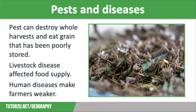The climate in LICs makes people vulnerable to a variety of pests that can harm crops, such as locusts, who often destroy whole harvests. Poverty also means that farmers are unable to use pesticides to protect their crops from this threat. In addition, facilities used to store grain in LICs can be poor, meaning that what has been grown is often eaten by rodents.